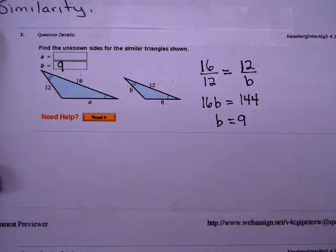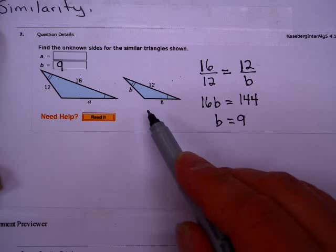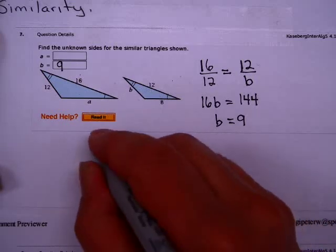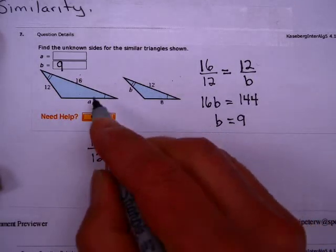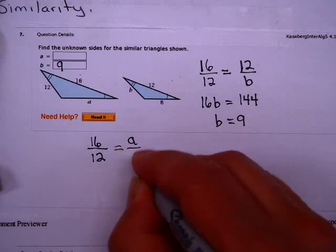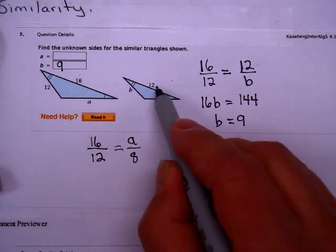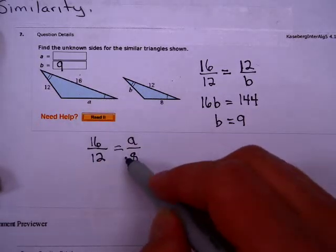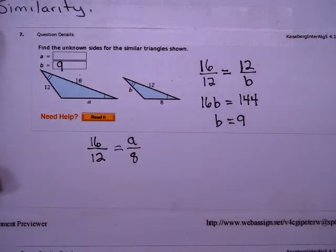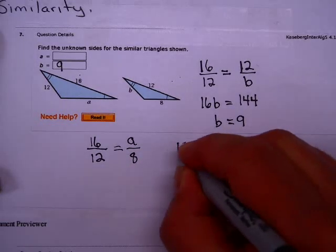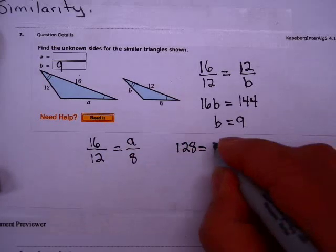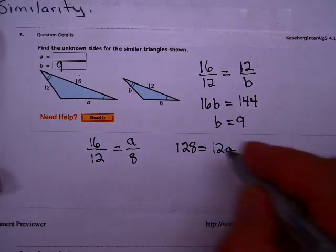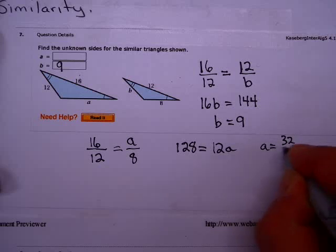What about A? Why don't you try to find A on your own and restart the video when you're ready? To find A, I'm going to use my 16 and 12 again, and A over 8. Notice, if this triangle is compared to this triangle, I have to do the same order on this side of the equation also. And that gives you A times 16, which is 128, equals A times 12. And that gives you 128 divided by 12, or if you reduce that fraction, A is 32 over 3.